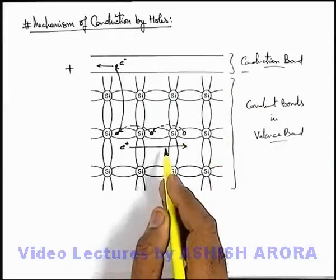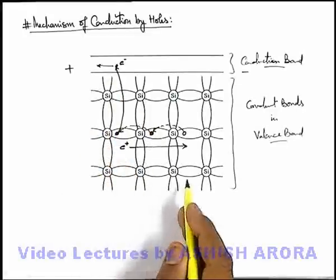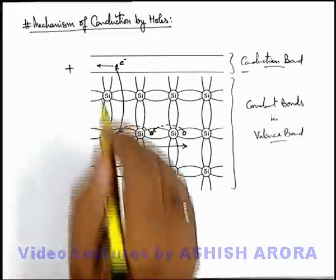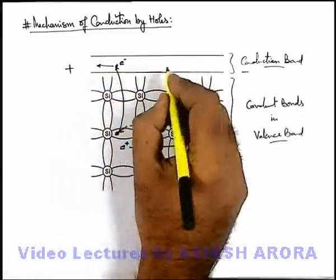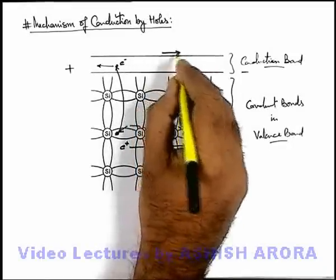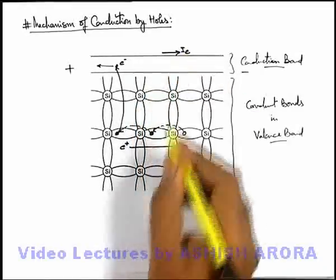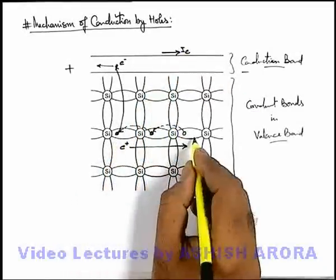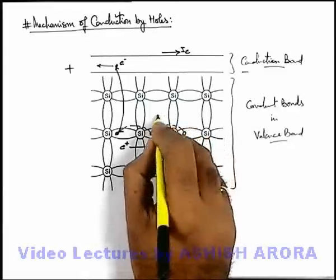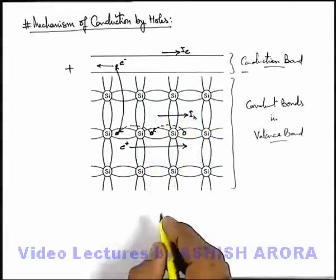In this manner we can say if the semiconductor is constituting a current, then due to electron flow in the conduction band, a current flows towards right which we can denote as I_e, and due to the flow of holes towards right, a current flows in valence band which can be denoted by I_h.